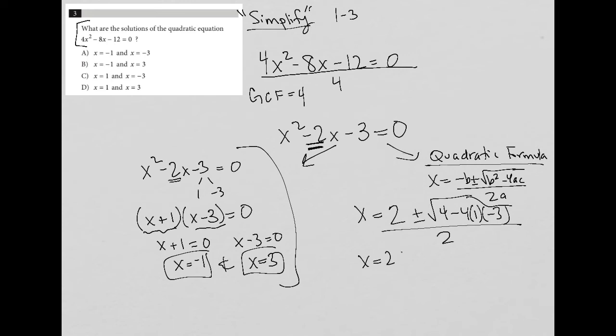And I have x equals 2 plus or minus the square root. So this negative 4 times 1 times negative 3 becomes positive 12. 4 plus 12 is 16, so still over 2. And because the square root of 16 is a perfect square, this becomes 2 plus or minus 4 over 2.